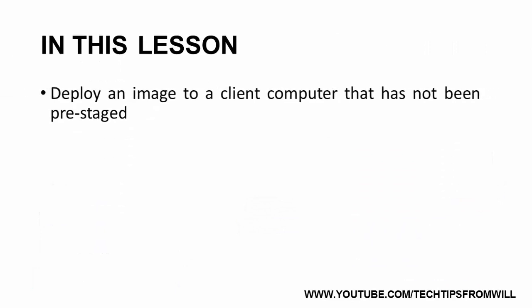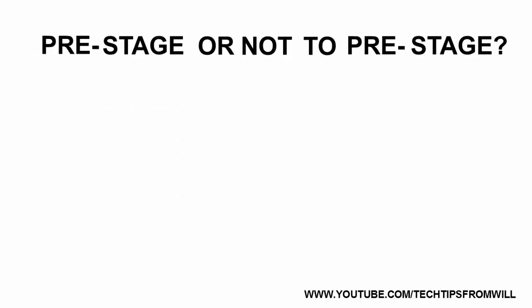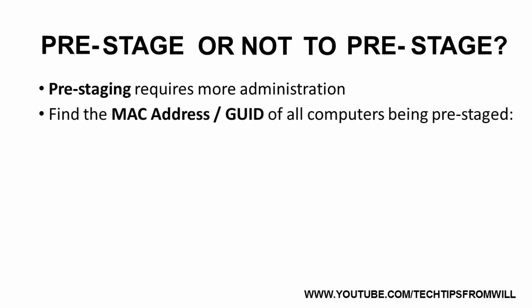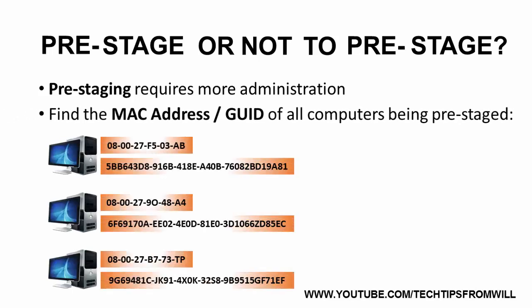The aim of this lesson is to demonstrate how to deploy images to client computers that have not been pre-staged. Although it may sound appealing to configure Windows Deployment Services so that only known computers can download images, pre-staging does come with its own set of problems. Pre-staging requires significantly more input from the network administrator. First, the administrator must learn either the MAC address or GUID of every computer they'd like to pre-stage.